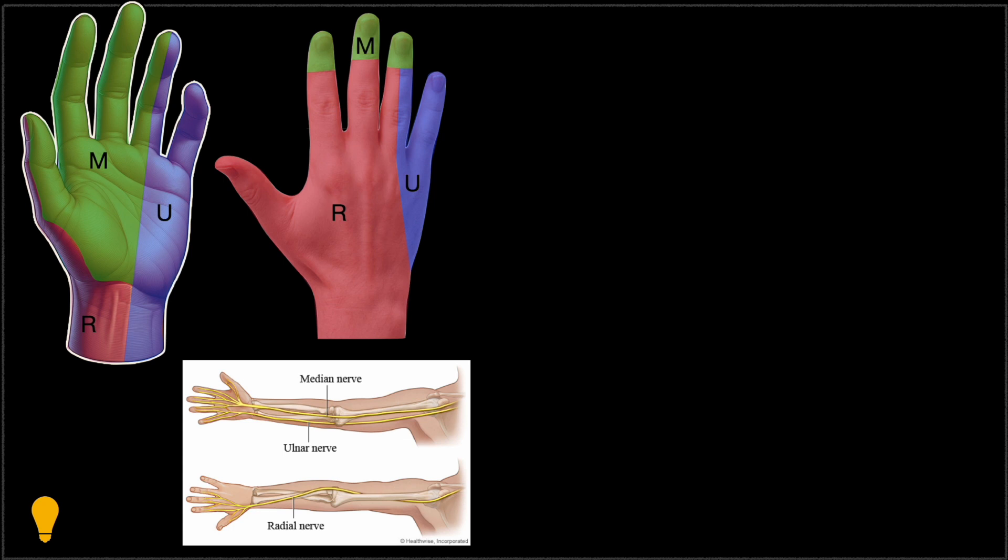The hand is innervated by various nerves, including the median, ulnar and radial nerves. These nerves provide sensation to different parts of the hand.